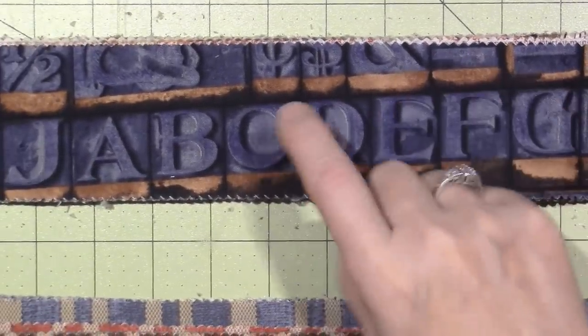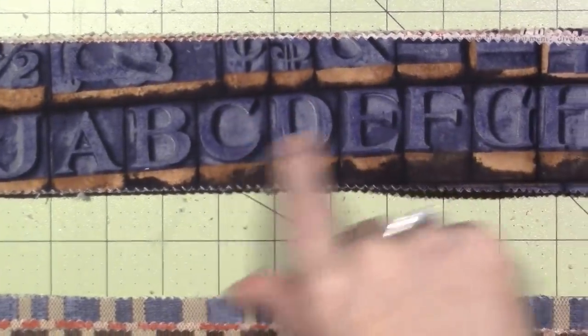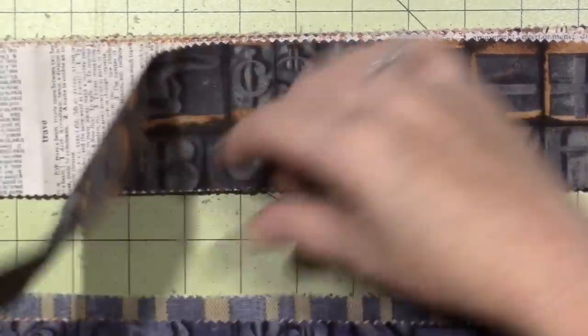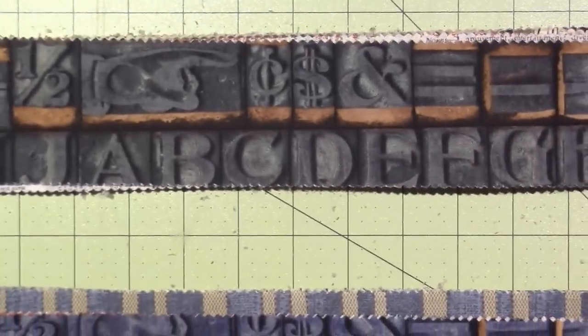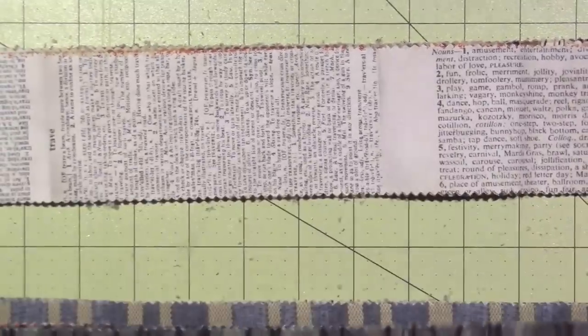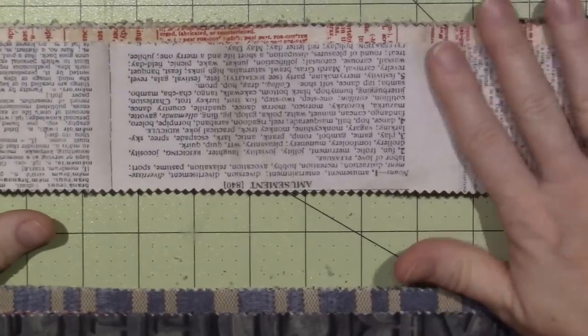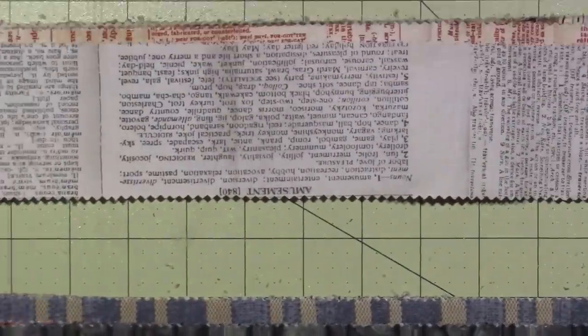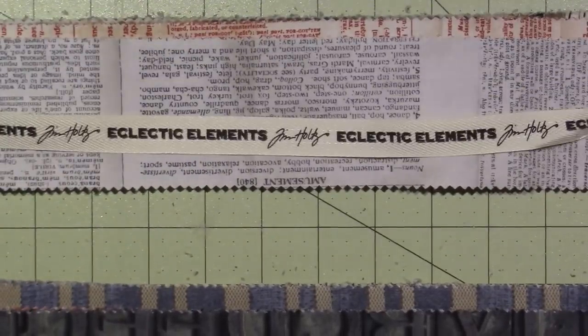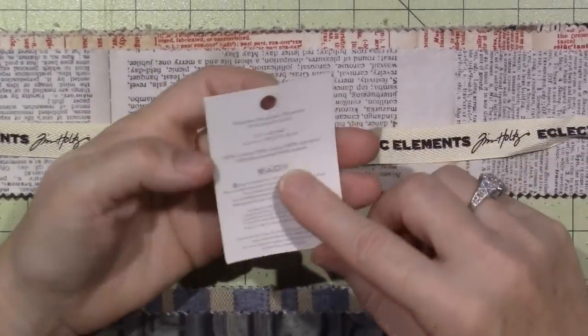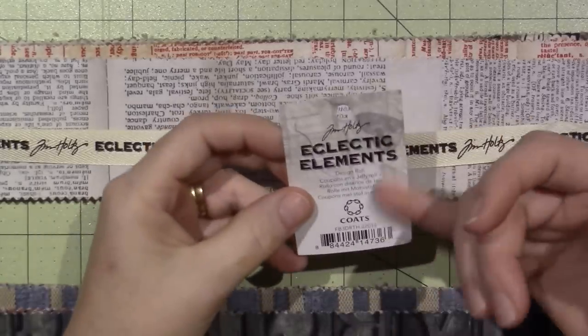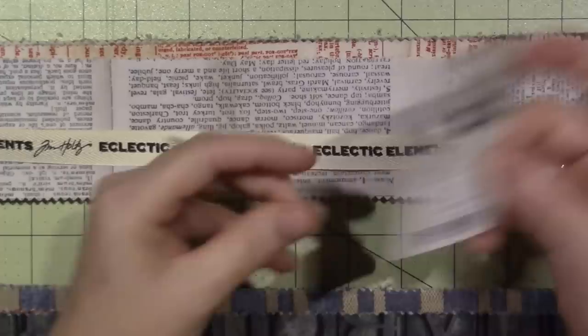What are these called, they're like typewriter blocks, right, of the letters. So I have that in blue. Gray, script. I wish I could, I'm pretty sure this was the only pack that was available, because this is called eclectic elements, so maybe he has other styles.